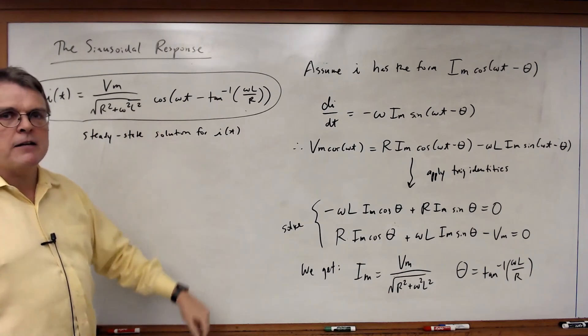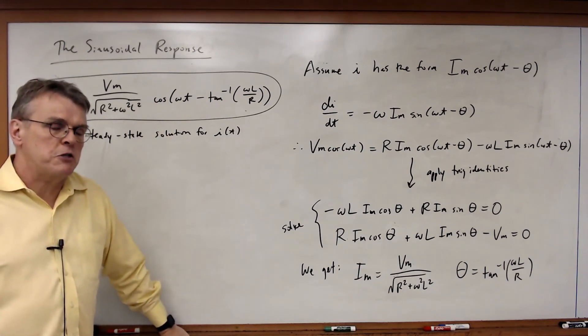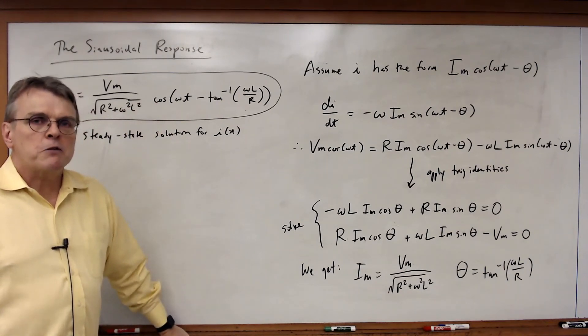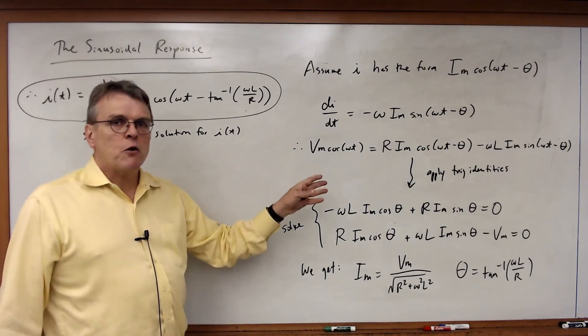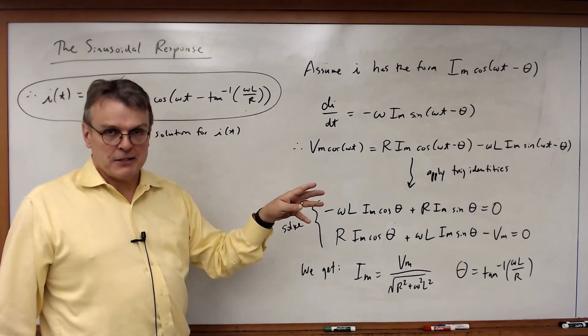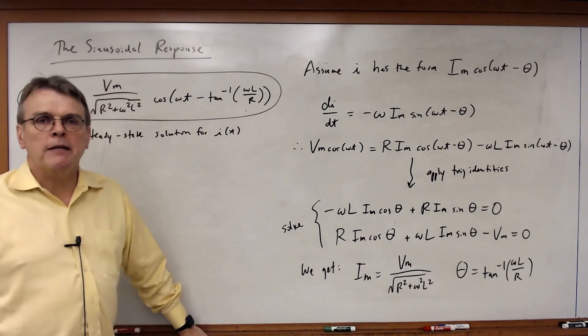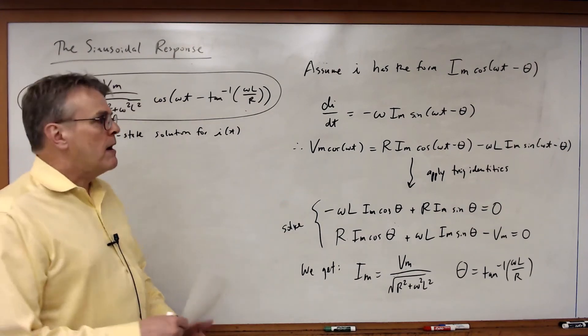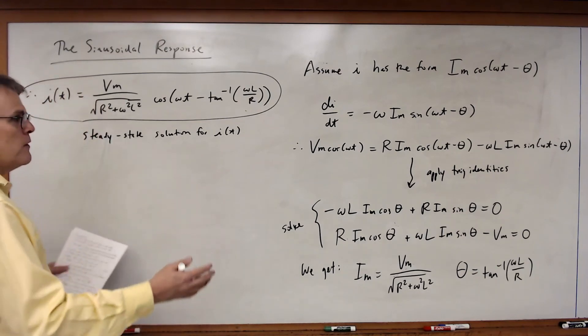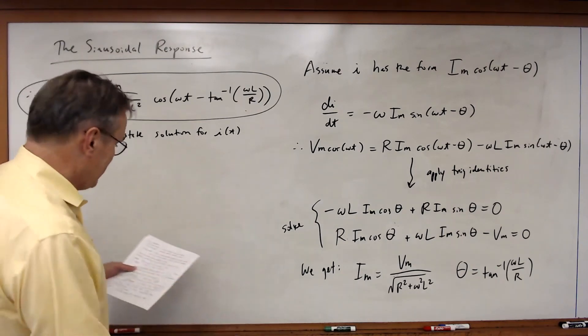What if I gave you a circuit with three loops and eight elements or multiple nodes and you wound up writing KVL and KCL equations for each mesh or each node? You would find yourself solving differential equations simultaneously. You can't do it. The math becomes completely intractable.